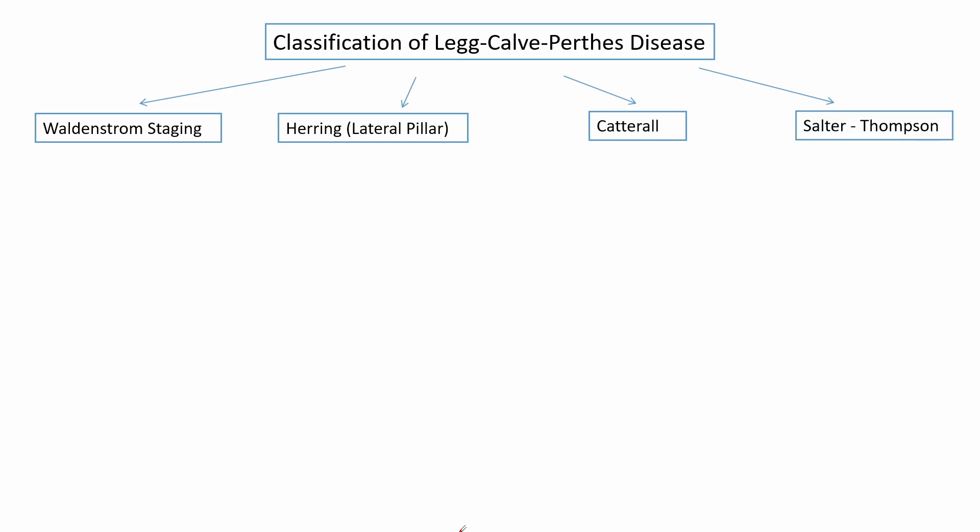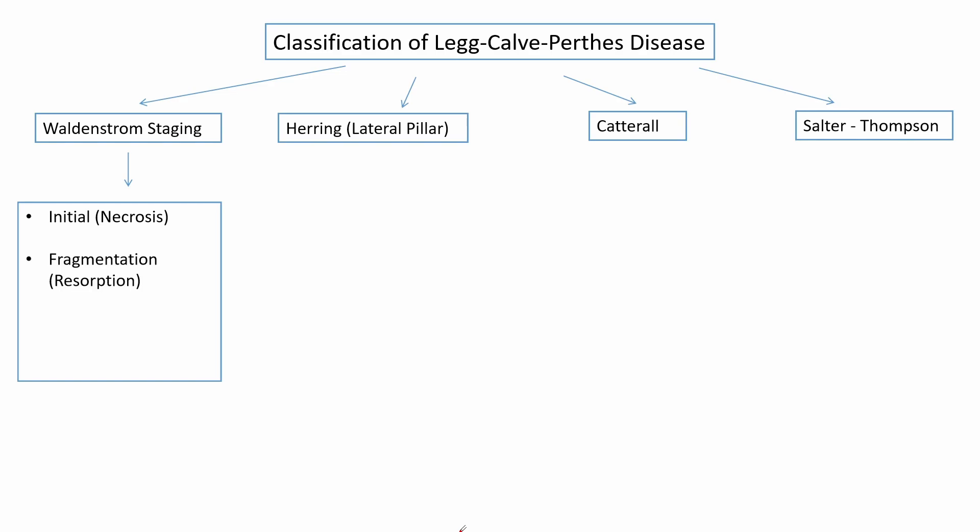Among these, the Waldenstrom staging and the Herring classification are the most important. The Waldenstrom staging describes the stages of Perthes disease. The first stage is the initial stage, in which interruption of blood supply to the femoral head leads to necrosis of the femoral head.